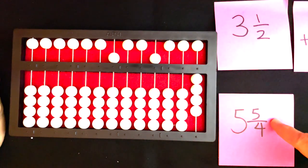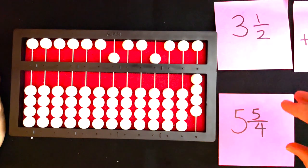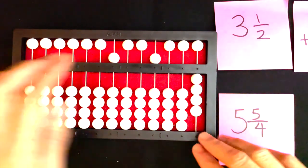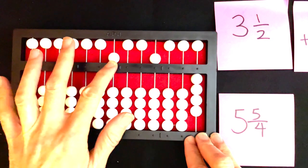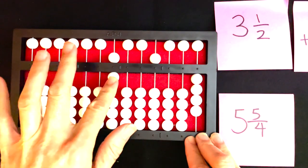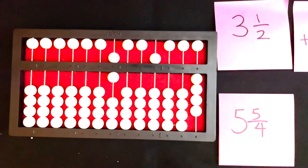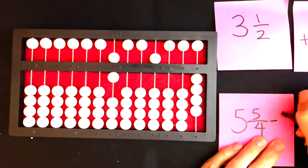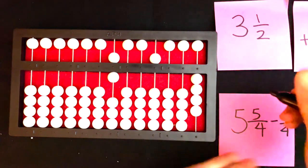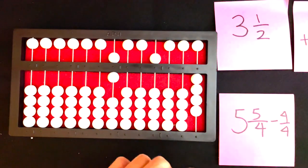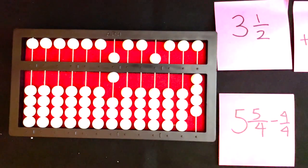I know that four-fourths is going to be one. So I want to take that four-fourths, that one out, and I'm going to add that whole number to my whole number section. In essence, I'm doing five-fourths minus four-fourths and I'm putting that one where it belongs.